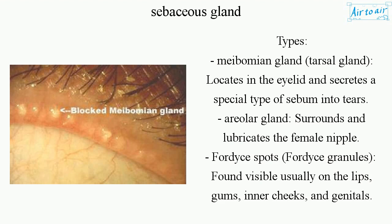Fordyce spots, also known as Fordyce granules, are found visible usually on the lips, gums, inner cheeks, and genitals.